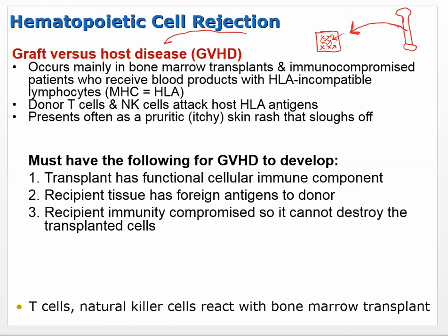Graft versus host disease presents often as a pruritic (itchy) skin rash that sloughs. This is what you watch for after a bone marrow transplant. Requirements for graft versus host disease: the transplant must have a functional cellular immune component (bone marrow), recipient tissue must have foreign antigens to the donor, and the recipient's immunity must be compromised so it can't fight back. It usually involves T cells and natural killer cells.